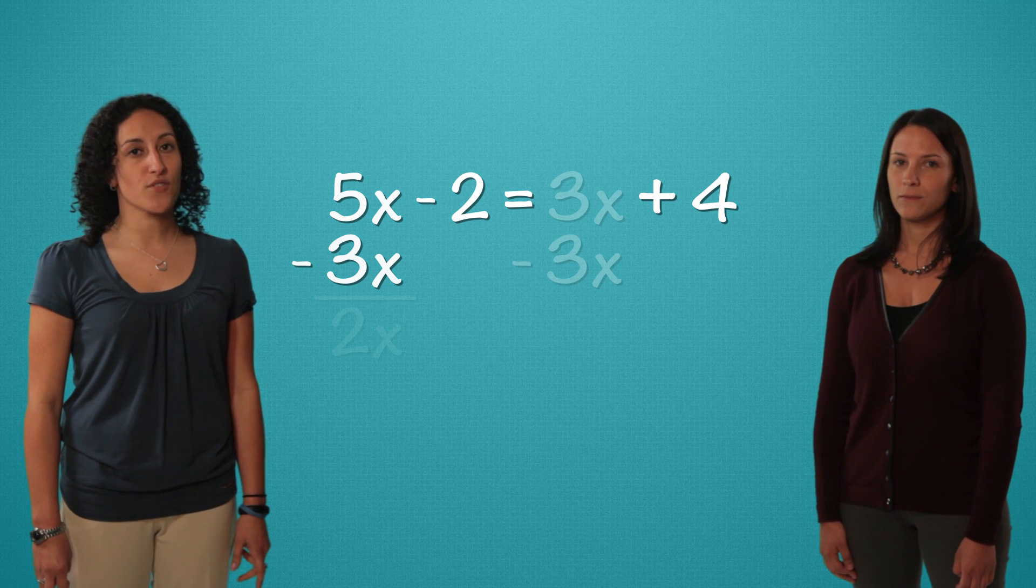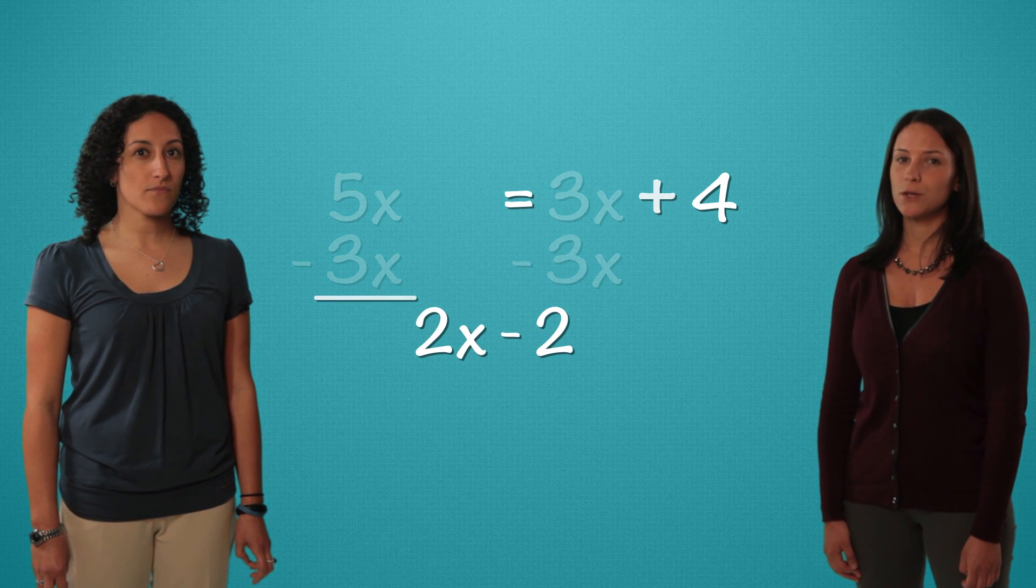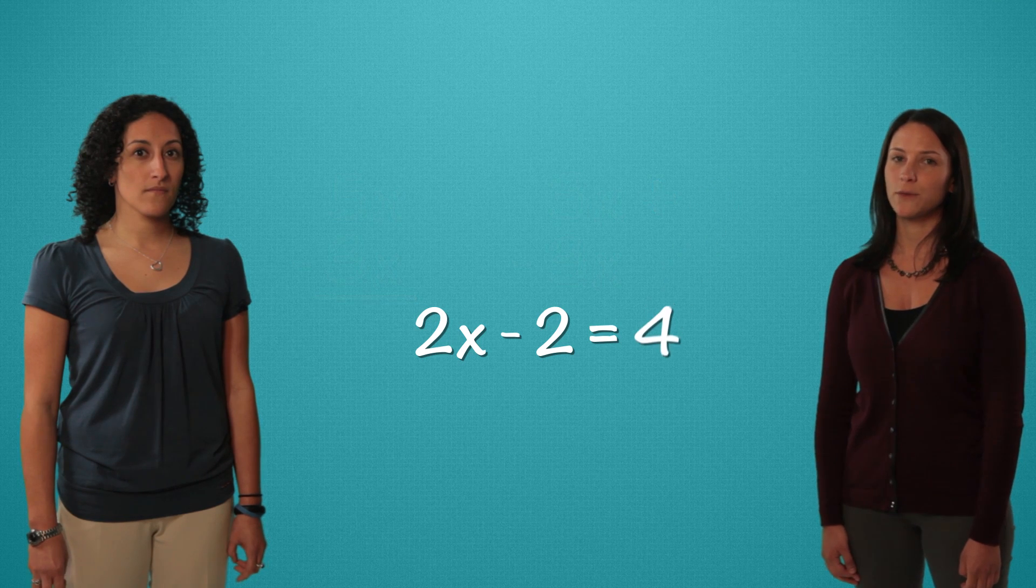So 5x minus 3x equals 2x. Let's bring down the negative 2 and the equal sign and the positive 4.